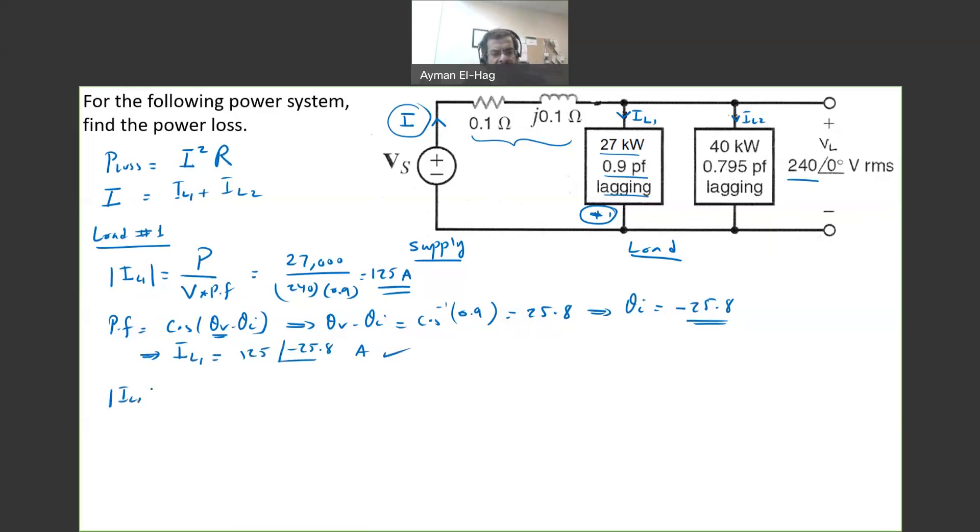We will repeat exactly the same thing for IL2. So, your IL2, now things become more straightforward. Just repetition, just change the value. So, the 40 kilowatt divided by the voltage, the 240, the same volt, because they are in parallel, times the power factor 0.795. And, this will give me 209.6 amps. The angle, theta V minus theta I is cosine inverse of the power factor, which is 0.795, which is equal to 37.3. And, hence, your IL2 is equal to the magnitude, the 209.6, and the angle, minus 37.3 amps.